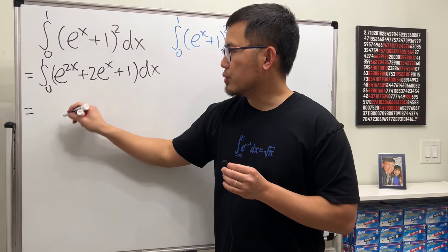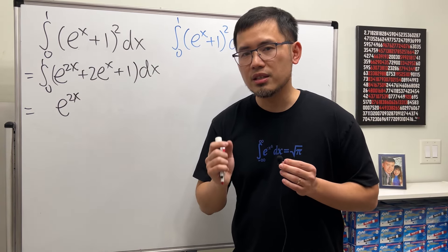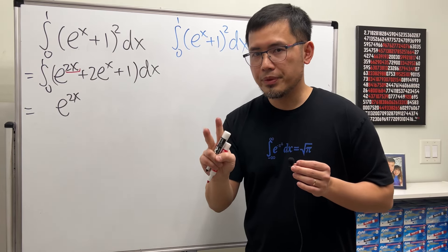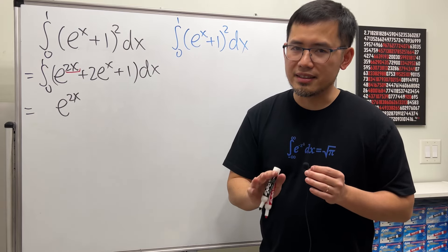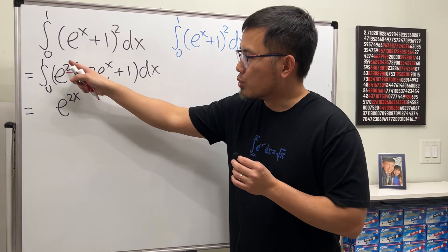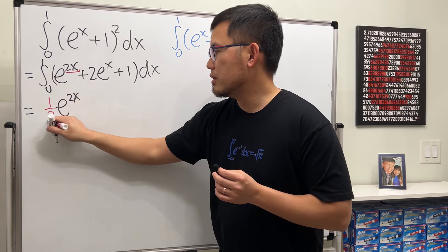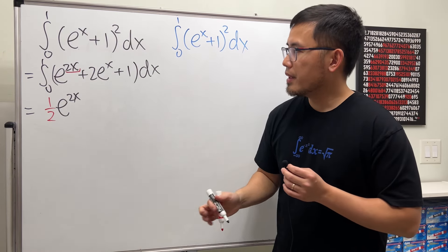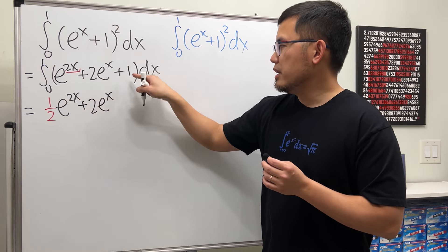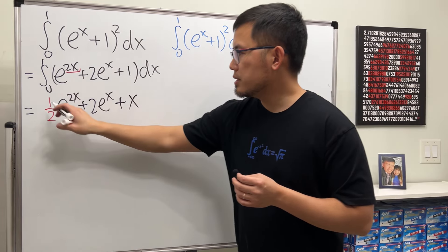Integrating e to the 2x, we first get e to the 2x. But wait, don't forget to check the derivative of the inner function. The derivative of 2x is 2. It's just a number 2, not like the number 2 pencil, but just a constant number 2. Whenever the derivative of the inner function is just a number, you can just go ahead and divide it by that number. So we have that one half there. Integrating 2e to the x is just 2e to the x. Integrating 1 in the x world is x. So we are done with integration.